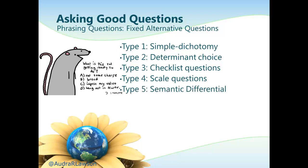The fifth type are semantic differential questions, designed to measure the connotative meaning of concepts. The respondent chooses their position on a scale between two bipolar adjectives — for example, adequate or inadequate, good or evil, valuable or worthless. Semantic differentials can describe not only people but also abstract concepts, and are today one of the most widely used scales in the measurement of attitudes because of the versatility of the bipolar adjective pairs, which can be used for many different kinds of subjects.